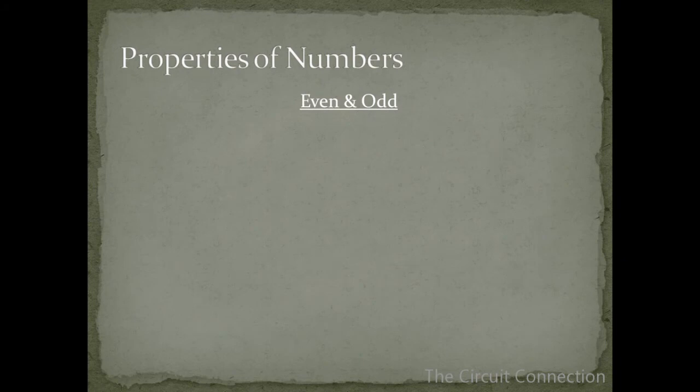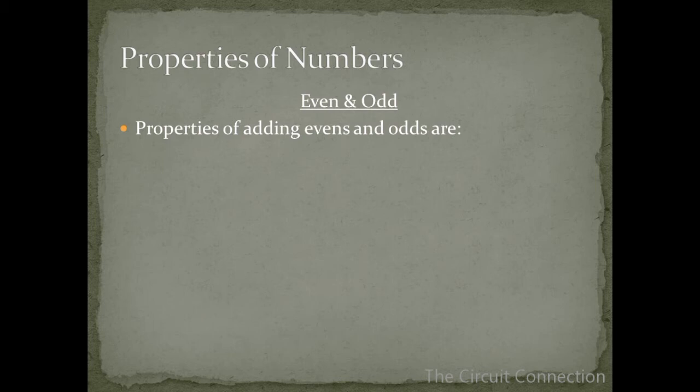So some more on even and odd. Properties of adding evens and odds are even plus even gives us an even. So for example, 8 plus 12 equals 20. 8 is even, 12 is even, it equals 20 which is also even.